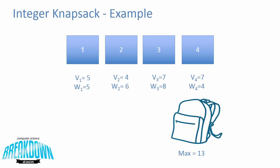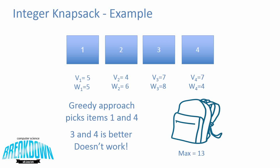First let's consider an example. We've got these 4 items, each with their own respective weights and values, and we have a backpack with a maximum weight of 13. The greedy approach from the fractional video takes the highest value-to-weight ratio first. Looking at these specific values, this is going to take item 4 first, because it has the highest value-to-weight ratio, and then it's going to take item 1. This gives you an okay value, but it's actually not optimal. Items 3 and 4 give a better solution and still fit inside the backpack.